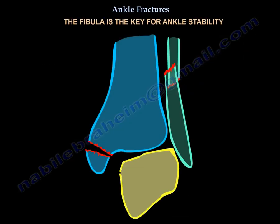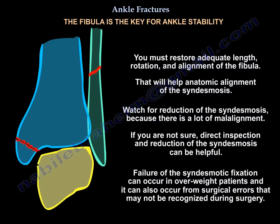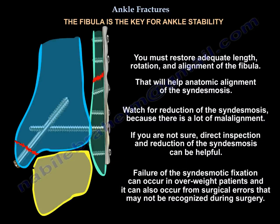Another important point: the fibula is the key for ankle stability. You must restore adequate length, rotation, and alignment of the fibula — that will help achieve anatomic alignment of the syndesmosis. Watch for reduction of the syndesmosis because there is a lot of malalignment. If you are not sure, direct inspection and reduction of the syndesmosis can be helpful.